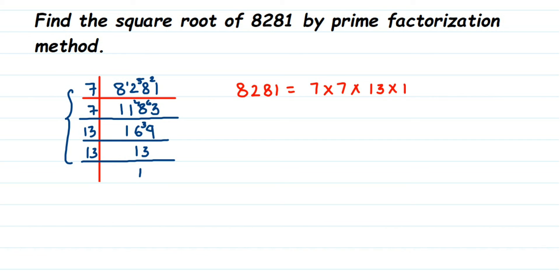And you can see that prime factors are in pairs. The 7 is in a pair, 13 is in a pair. Now to find out the square root of this number, from each pair we'll take one number, that is one factor, and multiply it. So square root of 8281 is equal to, from first pair I'll take 1 seven and from second pair I'll take 1 thirteen. Multiply them, so 7 times 13 is 91.